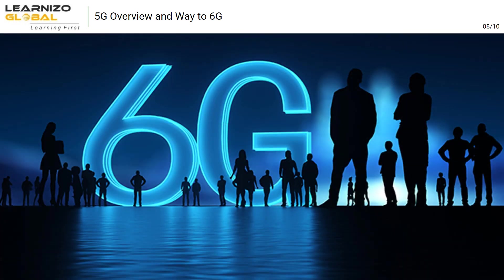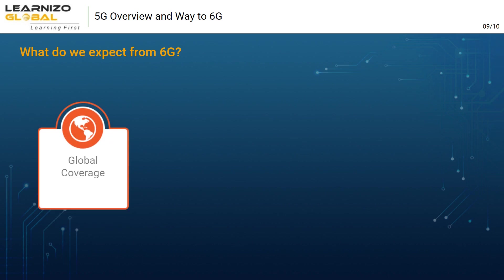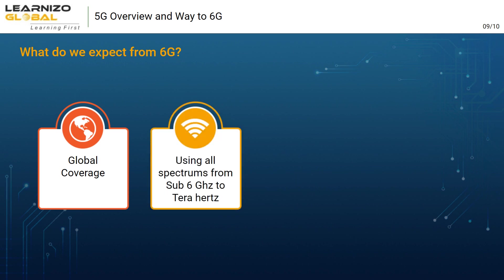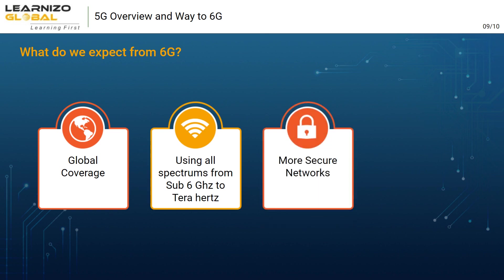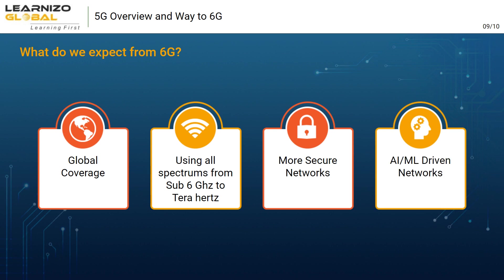We are yet to fully realize 5G networks, but standardization work is already going on for 6G. The expectations from 6G include: global coverage from satellite to terrestrial to maritime networks, using a variety of spectrums from sub-6 GHz to Terahertz. As networks become more open, they should also be more secure, and networks should be driven by artificial intelligence and machine learning.